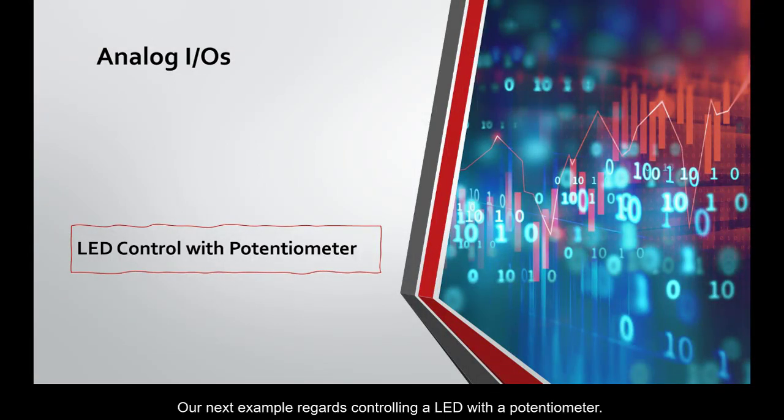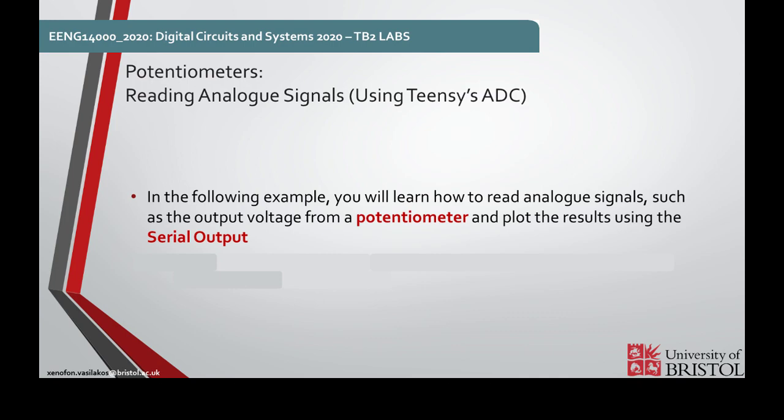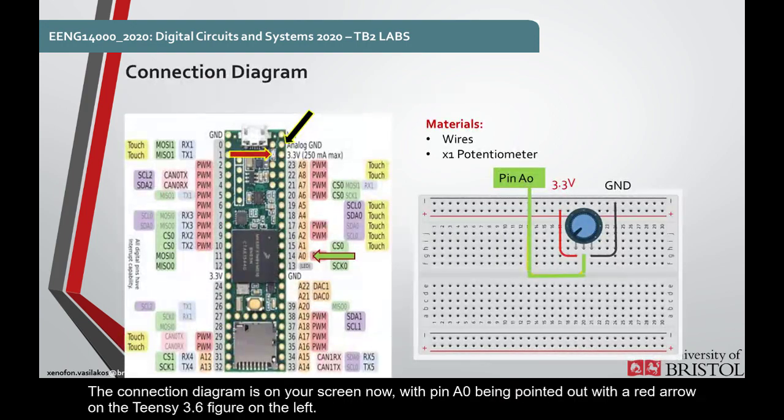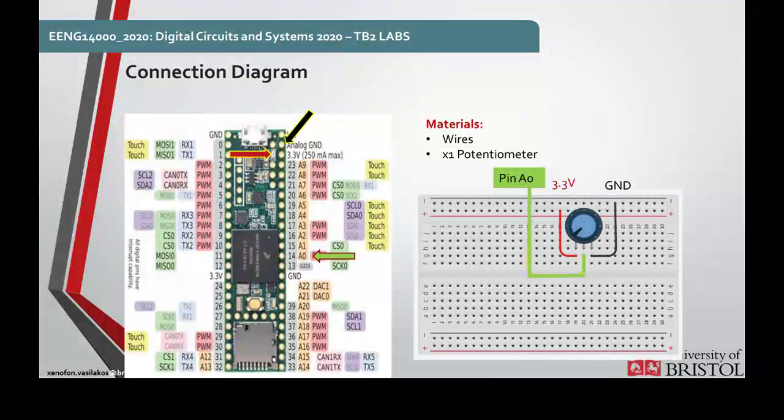Our next example regards controlling a LED with a potentiometer. Specifically, you will learn how to read analog signals, such as the output voltage from a potentiometer, and plot the results using serial output. The connection diagram is on your screen now, with pin A0 being pointed out with a red arrow on the Teensy 3.6 figure on the left. We only need wires and a potentiometer for this example.